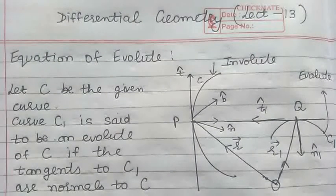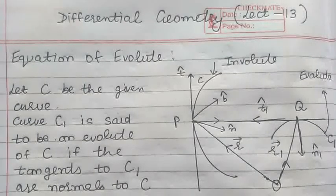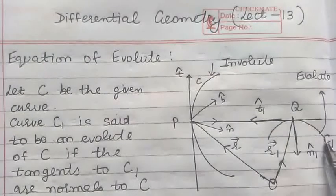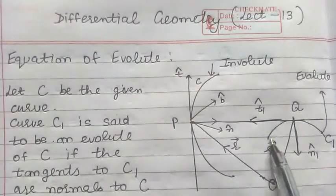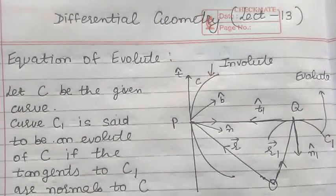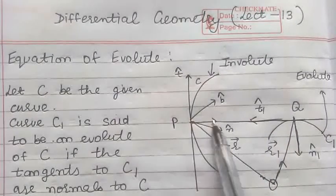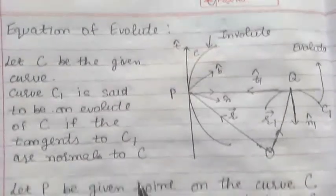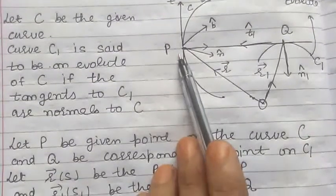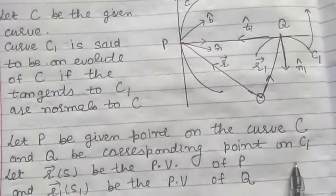Good morning students. Today we will discuss the equation of evolute. In order to discuss the equation of evolute, let us take a curve C and another curve C1. We say that the curve C1 is the evolute for the curve C if the tangents to C1 are the normals to the curve C. Now let P be a given point on the curve C and Q be a corresponding point on the curve C1.